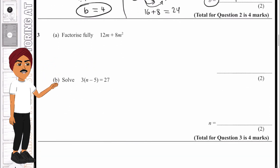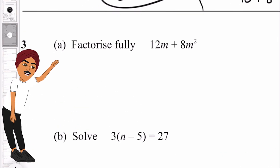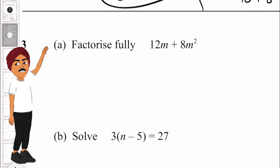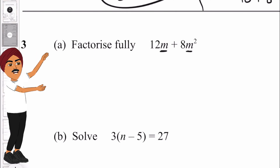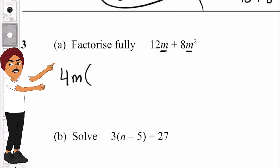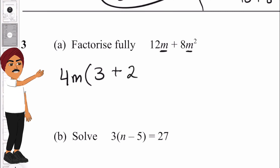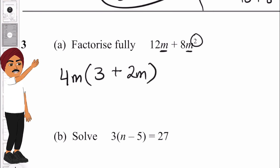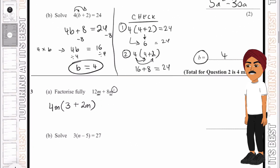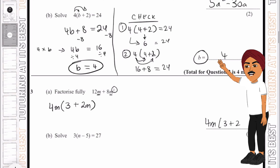Let's move to 3a — factorize. We need one number common between 12m and 8m². Both share the number 4 and the letter m, so 4m goes outside the bracket. Then 4m multiplied by 3 gives 12m, and 4m multiplied by 2m gives 8m². So our final answer is 4m(3 + 2m).